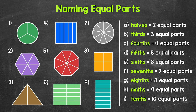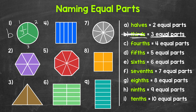For example, number one. This circle, our whole, has been divided into one, two, three equal parts. So three equal parts — we call three equal parts thirds. So let's put a B next to number one and cross off thirds. Now each of the equal parts is one third of the whole. So this is one third of the whole circle, this is one third of the whole circle, and this is one third of the whole circle.